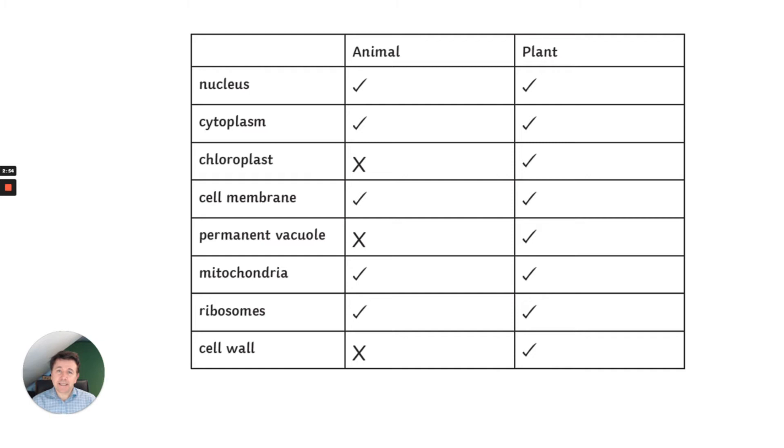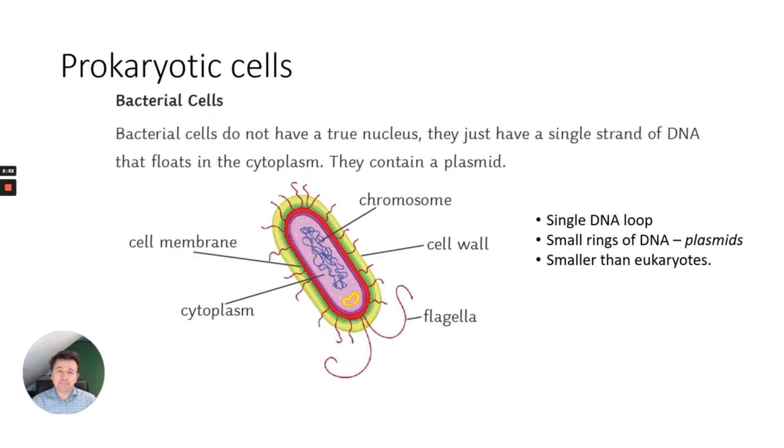Prokaryotic cells are slightly different to eukaryotic cells. A good example is bacteria. Bacterial cells do not have a true nucleus, they just have what we call a single strand of DNA that floats in the cytoplasm.